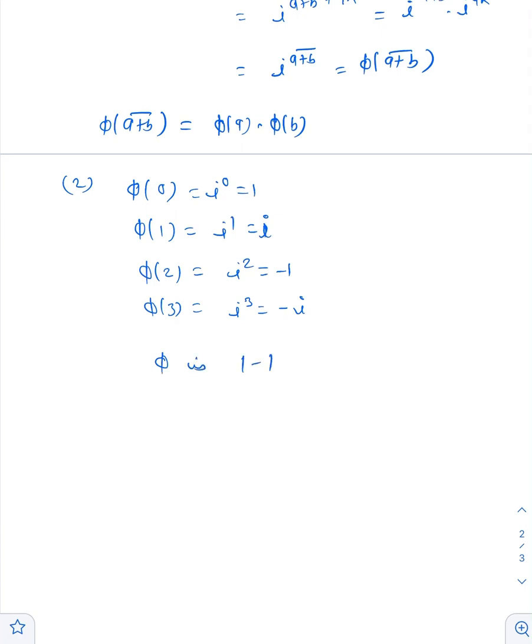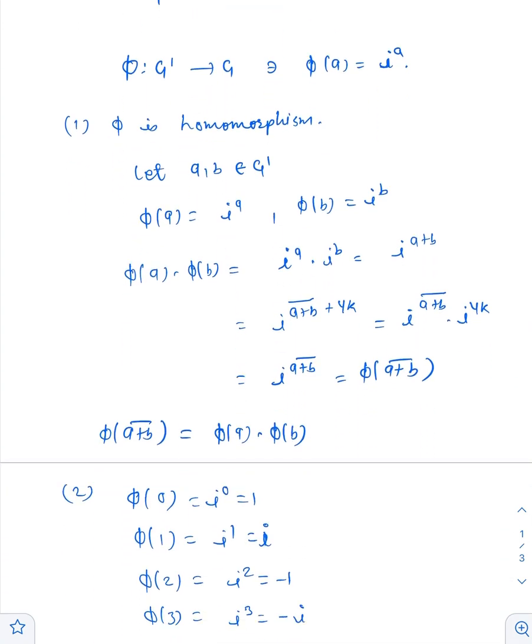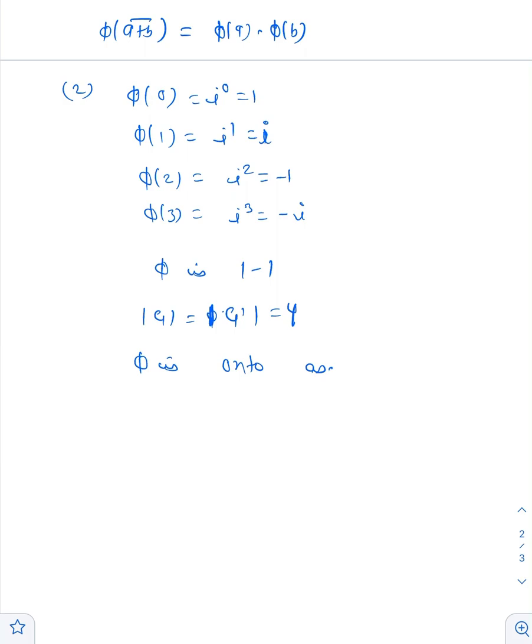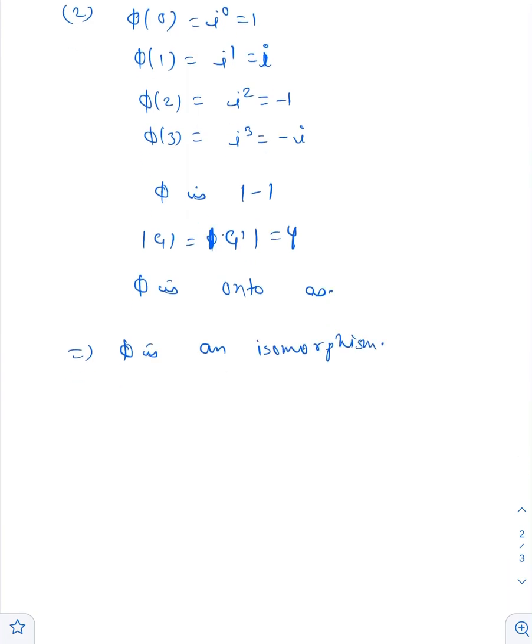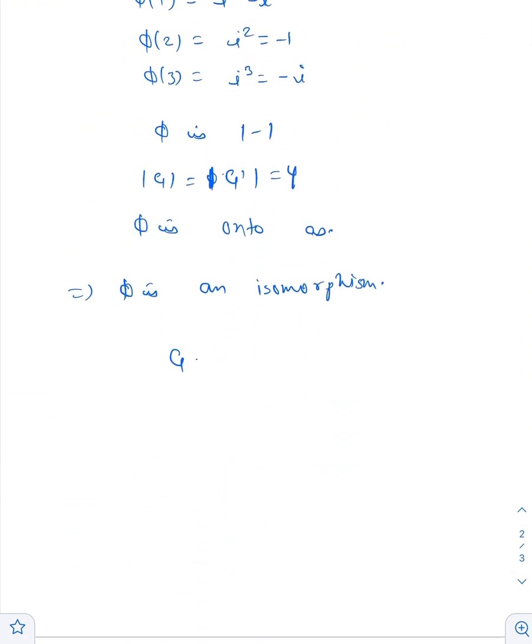Since phi is one-one and the cardinality of G and G' is equal to 4, phi is onto as well. Also we can see that there is no element of G which is not an image of phi. This shows that phi is an isomorphism, and these two groups G and G' are isomorphic to each other. Thank you very much.